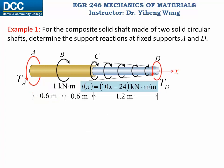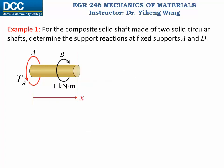Next, we section between point B and C at a random location x, exposing the internal torque TBC drawn counterclockwise. The equilibrium equation gives TA − 1 + TBC = 0. From here we solve TBC = 1 − TA, the internal torque between point B and C expressed in terms of TA.